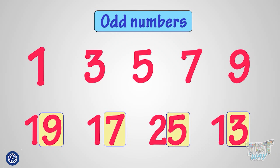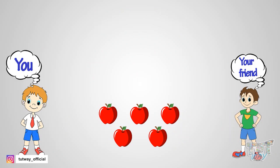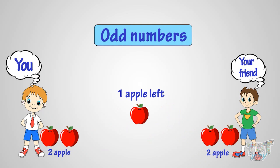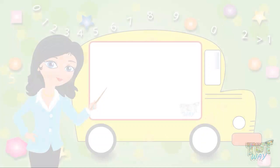So, what have we learnt? We have learnt that any number of things that cannot be shared equally are odd number of things.